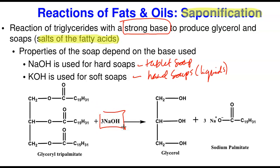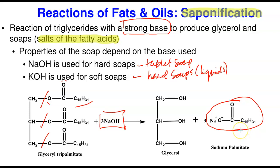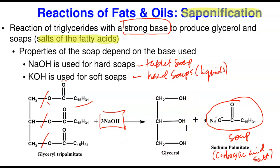In saponification, sodium hydroxide or potassium hydroxide breaks the ester bond. The sodium ion from sodium hydroxide joins the acidic fatty acid portion to form the salt — sodium palmitate, a carboxylic acid salt, also called a fatty acid salt — and this is the soap. The OH group then connects to the carbon backbone to regenerate the glycerol. So the reaction of triglyceride with a strong base produces soap and liberates glycerol.